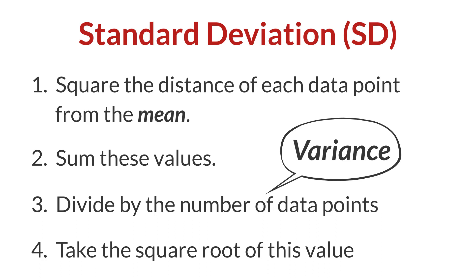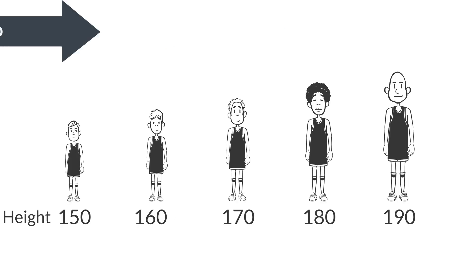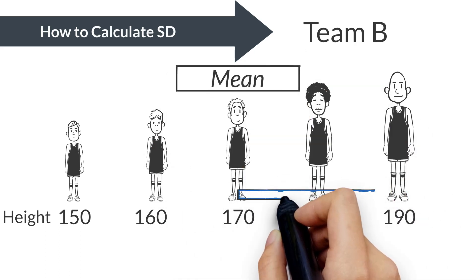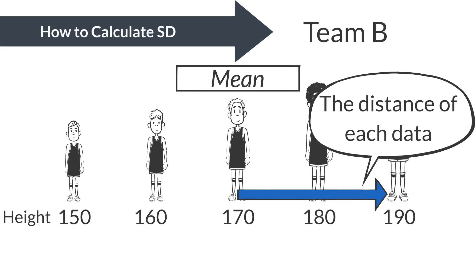It might seem a bit tricky at first, but don't worry. We'll tackle these calculations together. Using the earlier data, let's calculate the standard deviation for Team B. Their heights vary considerably. The mean height is 170 centimeters.